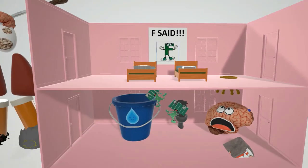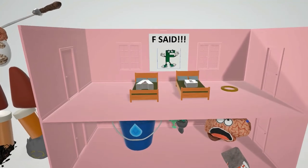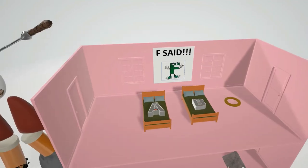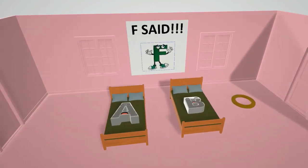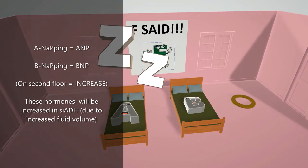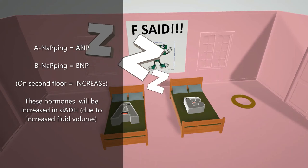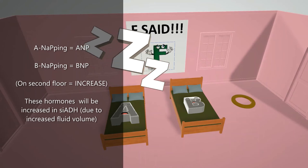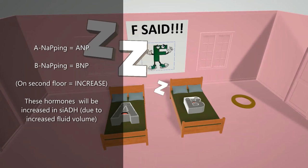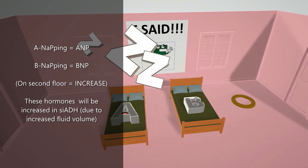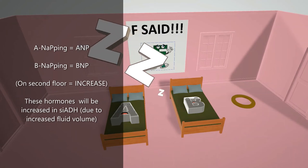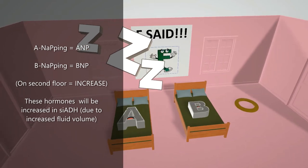These beds are high up on the second floor because they represent a lab value that is increased. ANP and BNP levels will be increased in SIADH. These hormones are activated in response to atrial and ventricular volume and pressure expansion. Due to the increase in volume caused by SIADH, ANP and BNP levels will be elevated — that's why they're on the second floor.